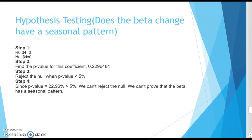We then perform hypothesis testing to check whether beta changes and has a seasonal pattern. We reject the null hypothesis if the p-value is less than 5%. Since the p-value for the coefficient is greater than 5%, we cannot reject the null hypothesis and cannot prove that beta has a seasonal pattern.